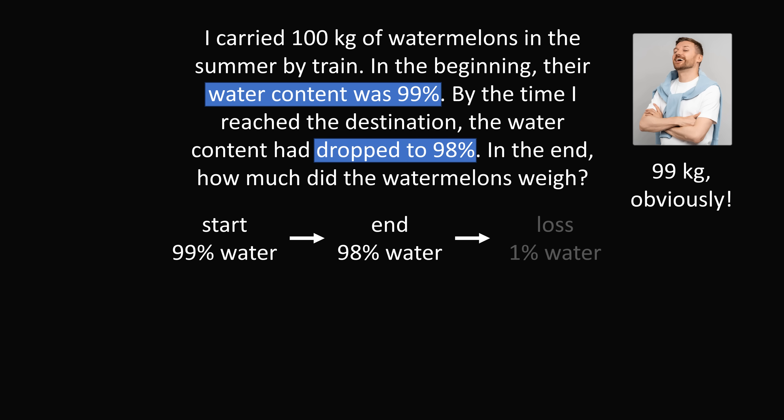In the end the water content dropped to 98%. So that would be a loss of 1% of water. The weight at the beginning was 100 kilograms. So a loss of 1% of 100 will be 1 kilogram. Therefore the final weight will be 99% of 100 kilograms, which equals 99 kilograms. Piece of cake.